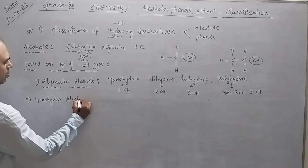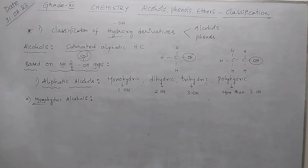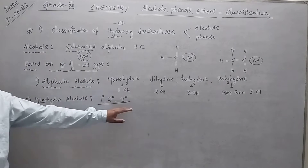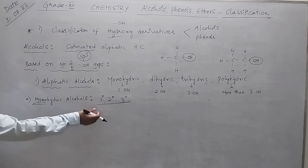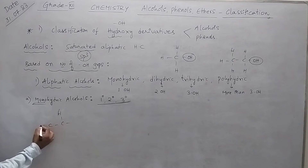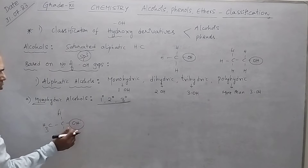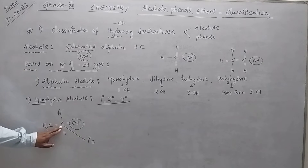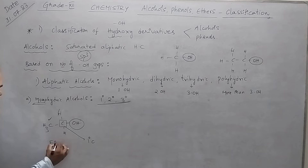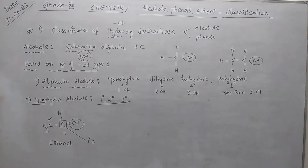Monohydric alcohols contain one OH group, and there are three types: primary, secondary, and tertiary — depending on the nature of the carbon. For example, if the OH group is connected to a primary carbon (which is surrounded by only one other carbon), we get ethanol. This is a primary alcohol, and since it has only one OH group, it is monohydric.